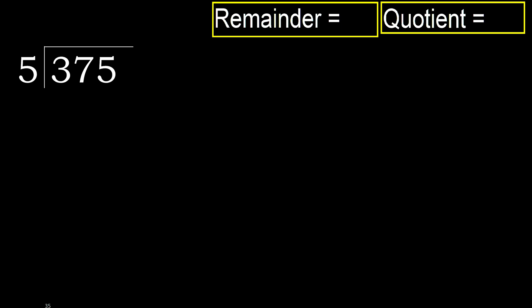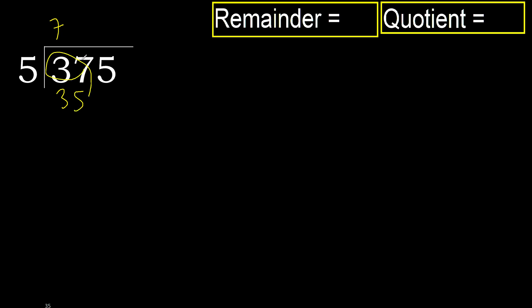375 divided by 5. 3 is less, so next we take 37. 37 is not less. With 37: 5 multiplied by which number is nearest to 37 but not greater? 5 multiplied by 8 is 40, which is greater. Multiply by 7: 35 is not greater. 37 minus 35 is 2. Next.